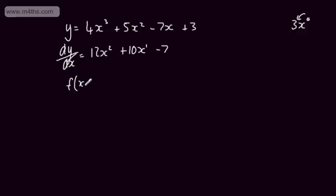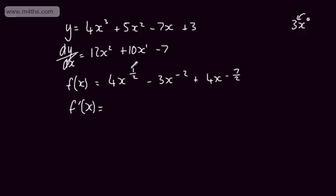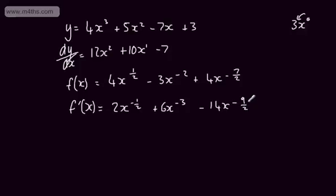Using function notation, if f(x) = 4x^(1/2) − 3x^(−2) + 4x^(−7/2), then we can find f′(x), the first derivative or gradient function. Multiplying down by the power and dropping by 1, we get f′(x) = 2x^(−1/2) + 6x^(−3) − 14x^(−9/2).